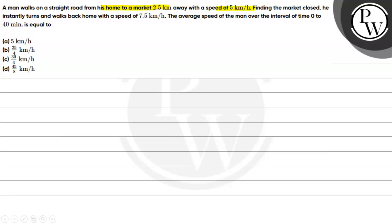While finding the market closed, he instantaneously returns and walks back home with a speed of 7.5 km per hour. The average speed of the man over the interval of 0 to 40 minutes.